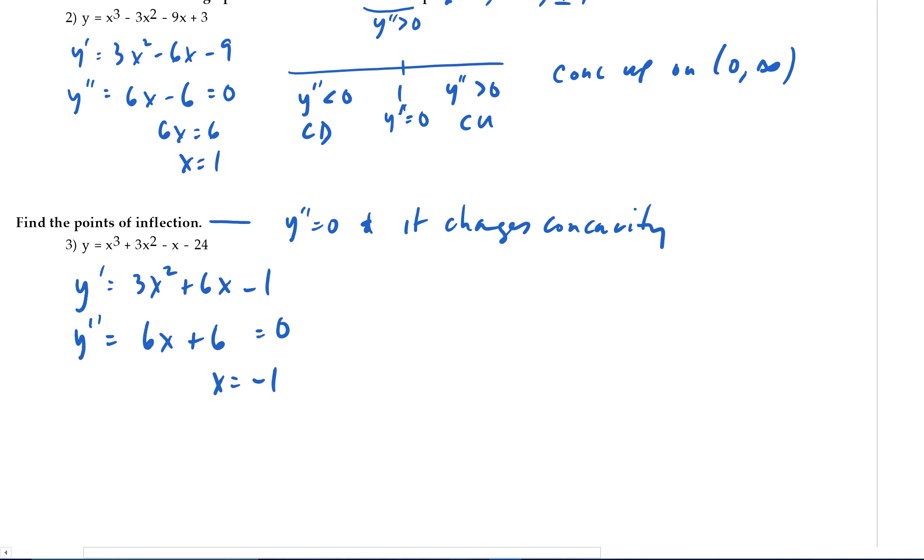I don't know if you can hear the dishes in the background. So we've got negative 1. And what's happening to y double prime to the left of negative 1? Plug in negative 2. That makes y double prime negative. Concave down. Y double prime for numbers bigger than negative 1, like 0. Positive. Concave up.